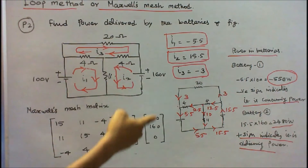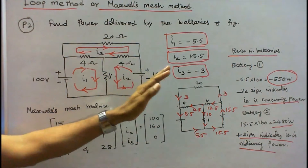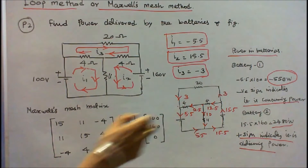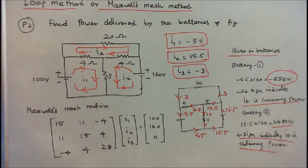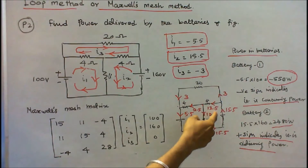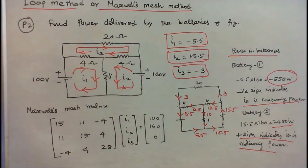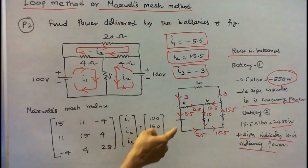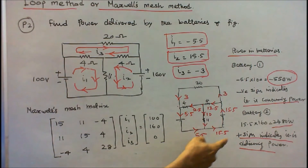Solving the matrix: I1 = minus 5.5 amps, I2 = 15.5 amps, I3 = minus 3 amps. The current through the 20 ohm resistor is 3 amps. Current supplied by battery 2 is 15.5 amps. Current through the 4 ohm resistor is 15.5 minus 3 = 12.5 amps. Current through the 11 ohm resistor is 12.5 minus 2.5 = 10 amps. Current towards battery 1 is 2.5 plus 3 = 5.5 amps, and 10 plus 5.5 = 15.5 amps, verifying Kirchhoff's current law.